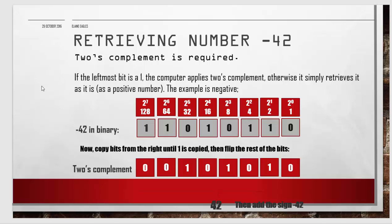When the number is retrieved, if the leftmost bit is a one, the computer applies two's complement, which is doing the reverse. Otherwise it simply retrieves it as a positive number. In this example, minus 42 was stored like this, so copy the bits from the right until the first one is encountered, flip the rest, and that gives us 42: 32 plus 8 is 40 plus 2. Then the sign is added to make it minus 42.